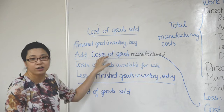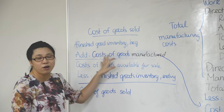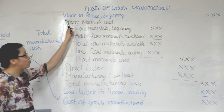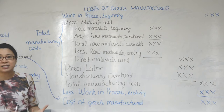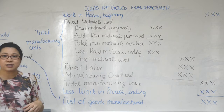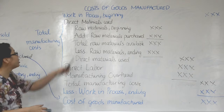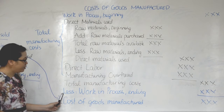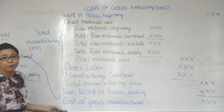Now the question is: how can we find the cost of goods manufactured? To find cost of goods manufactured, there are some steps. At the beginning, you take work in process beginning — that is the cost of inventory we are still in the process of producing, that we haven't finished yet. Then we add the total manufacturing cost, minus work in process at the end, and that gives us cost of goods manufactured.